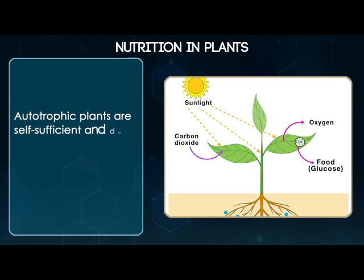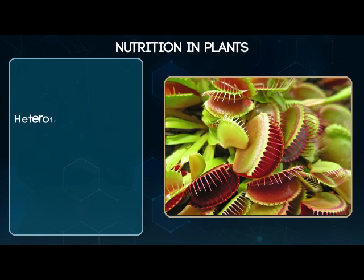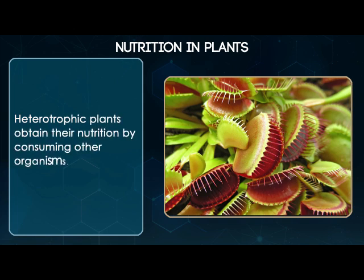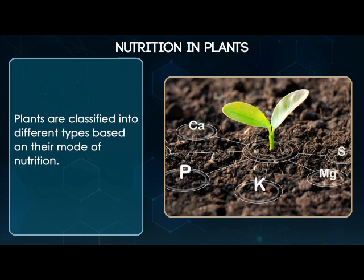Autotrophic plants are self-sufficient and do not require other organisms for their nutrition. Heterotrophic plants obtain their nutrition by consuming other organisms. Plants are classified into different types based on their mode of nutrition.